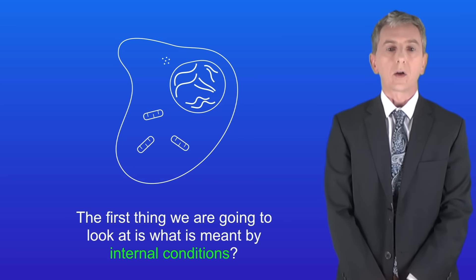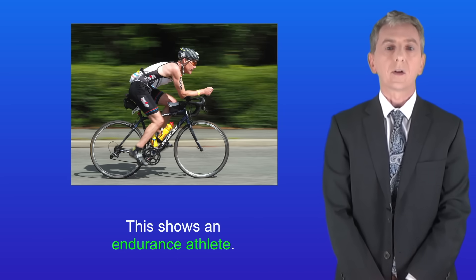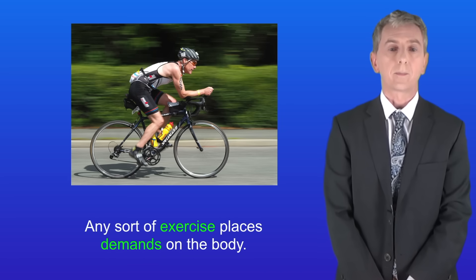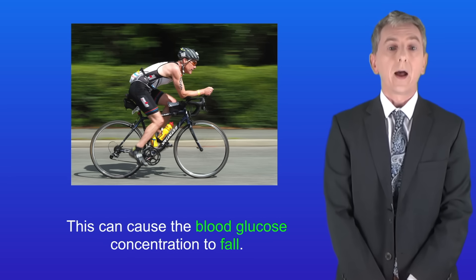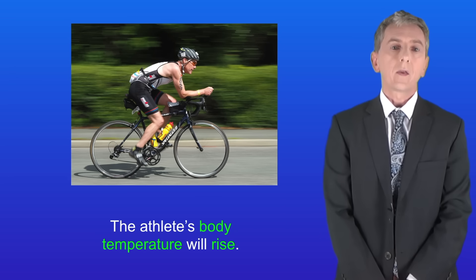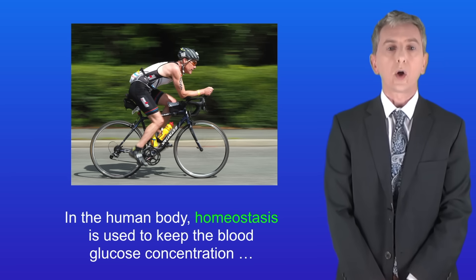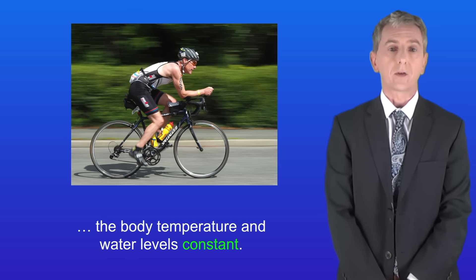The first thing we're going to look at is what is meant by internal conditions. I'm showing you an endurance athlete here — any sort of exercise places demands on the body. For example, respiration will use glucose to generate energy, which can cause blood glucose concentration to fall. The athlete's body temperature will rise and he'll lose water through sweating. So in the human body, homeostasis keeps blood glucose concentration, body temperature, and water levels constant.